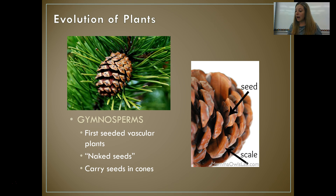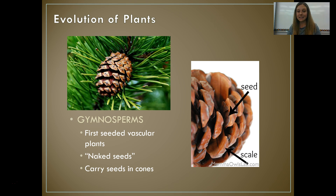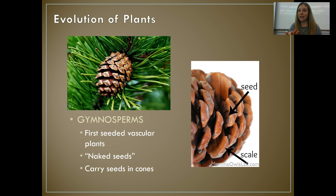Our first seeded vascular plants — after going from non-vascular plants to vascular plants still reproducing with spores — are called gymnosperms. The name means "naked seeds," so the seeds are not really protected; they're still sort of exposed to the elements. They are carried in cones, so a gymnosperm is a cone-bearing plant, and that is where they carry their seeds.